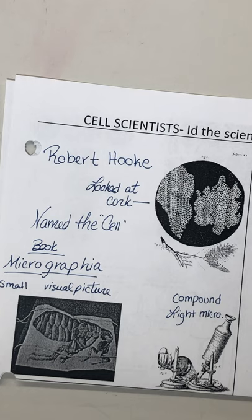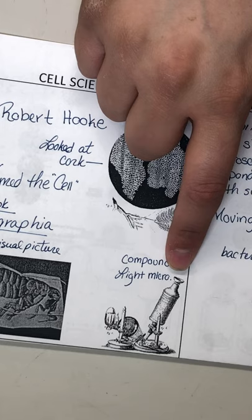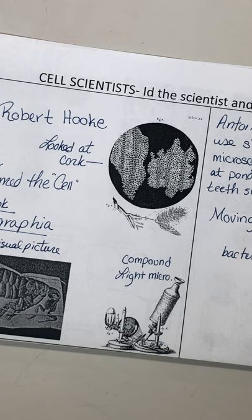The scientists back then tended to be wealthy because they had time on their hands. If you were in the working class, you got up, ate breakfast, went to work, came home, ate dinner, took care of the family, and went to bed. The wealthy were the ones who had time not only to create the scientific machinery, but also to investigate and explore. Typically we saw wealthy, influential people making scientific discoveries.